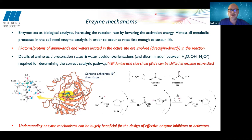Enzyme mechanisms are an area where we do a lot of work with neutrons. Enzymes are biological catalysts — they increase the reaction rate by lowering the activation energy, and almost all processes in the cell need enzyme catalysis to occur at rates fast enough to sustain life. In enzyme mechanisms, the hydrogen atoms and protons of amino acids and the waters in the active site are directly or indirectly involved in catalytic mechanisms. Details of amino acid protonation states, water positions and orientations, and discrimination between H₂O, OH⁻, and hydronium ions are all important for determining the correct catalytic pathway.